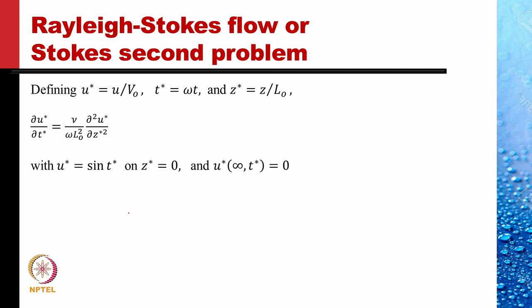After the transformation, the normalized equation results with boundary conditions: u-star equals sin(t-star) at z-star equals zero, and u-star equals zero at infinity for all times. So u-star is now a function of two independent normalized variables z-star and t-star, and one parameter: nu divided by (omega l naught squared).